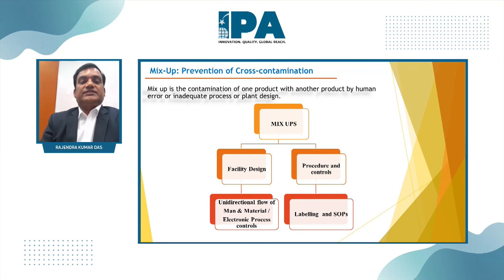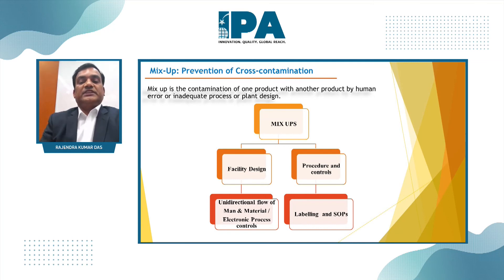The last contamination pathway is mix-up - the contamination of one product with another when two molecules are undesirably mixed. There are two factors: facility design, which should include unidirectional flow and electronic controls in the process; and procedural controls, including adequate labeling and SOPs.